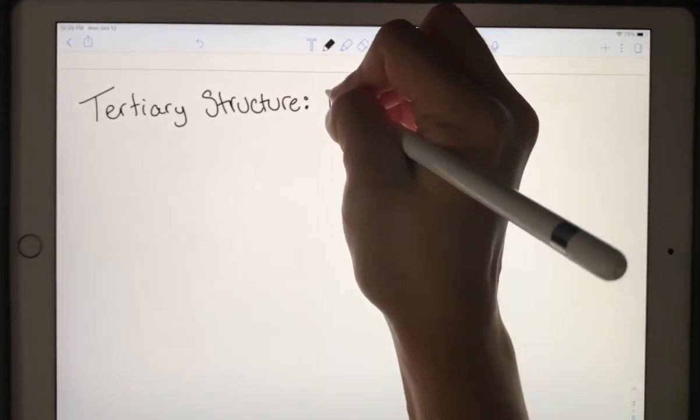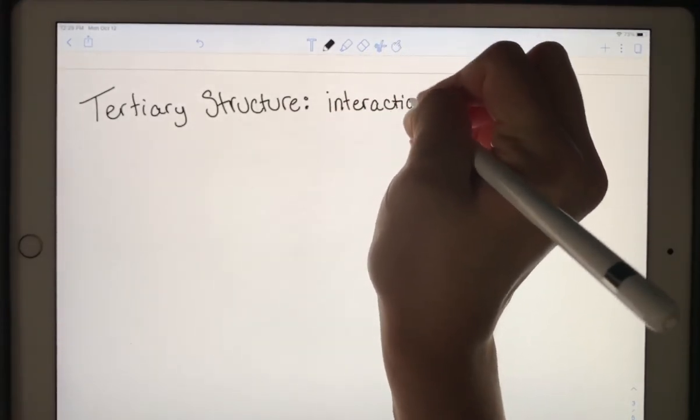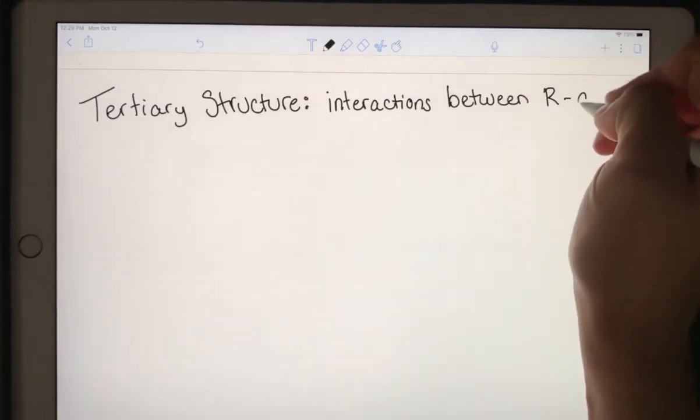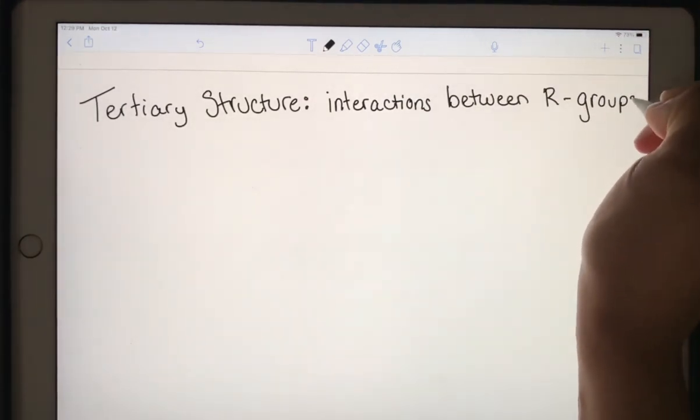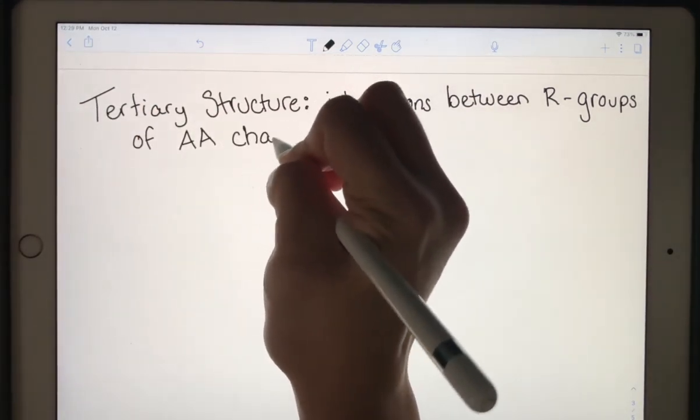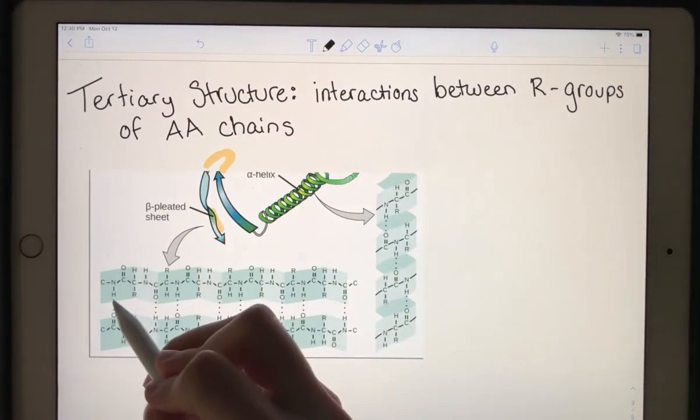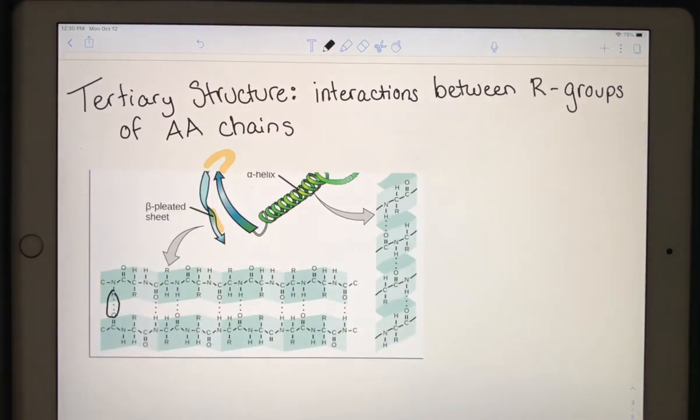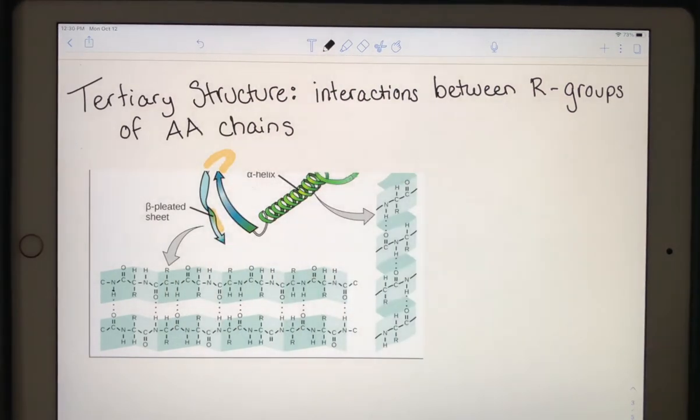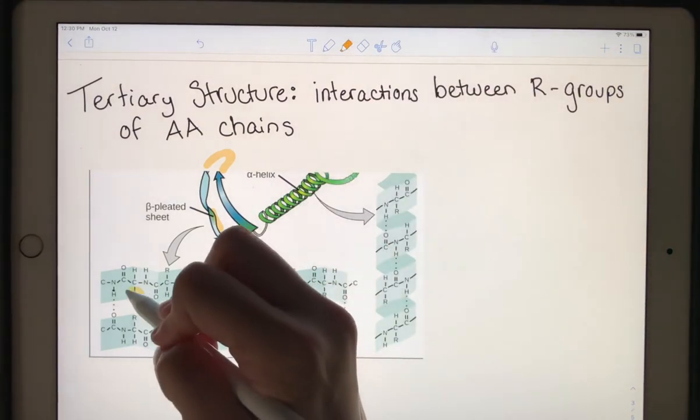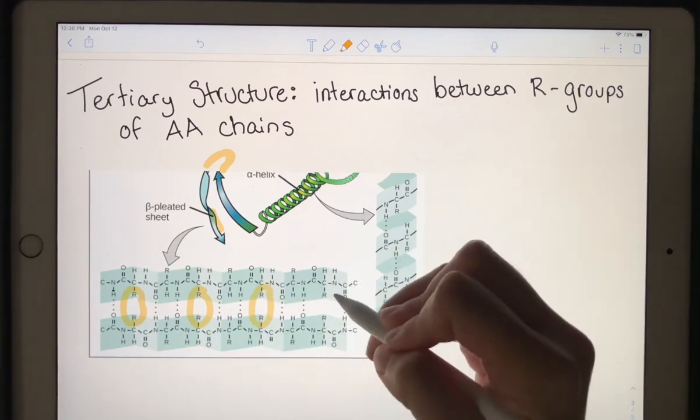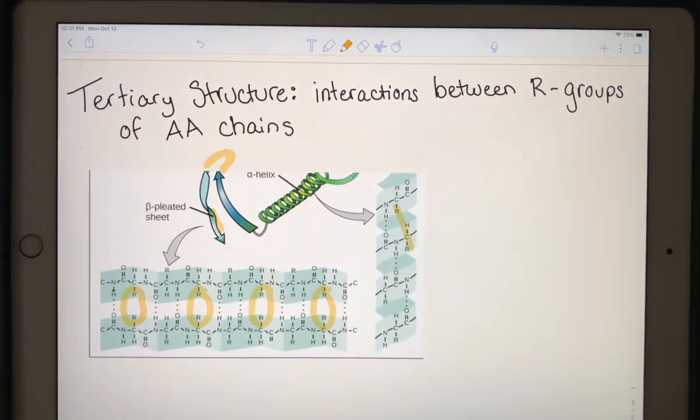Tertiary structure of a protein is going to be interactions between R groups. For secondary structure, we add these hydrogen bonds to make the alpha helix and the beta pleated sheet. With tertiary structure, what we care about is the relationships between R groups. And that's going to give us a little bit more of a complex structure. For now though, we can just say that tertiary structure is going to be interactions between those R groups.